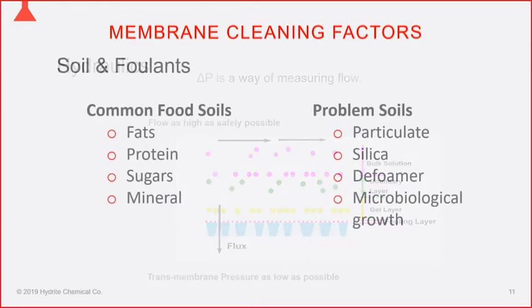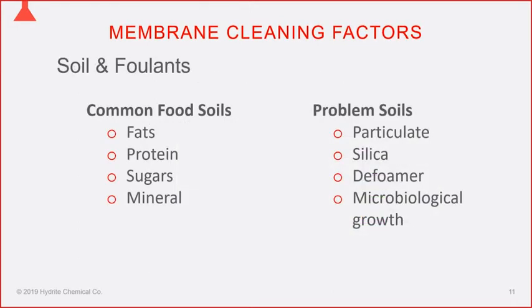For dairy processing, soils break down into four basic categories: fats, proteins, sugars, and minerals. The first three are organic soils and acidic in nature — you react those with caustics to help remove them. The final category, minerals, is alkaline in nature and requires an acid to remove. Those are the common food soils.